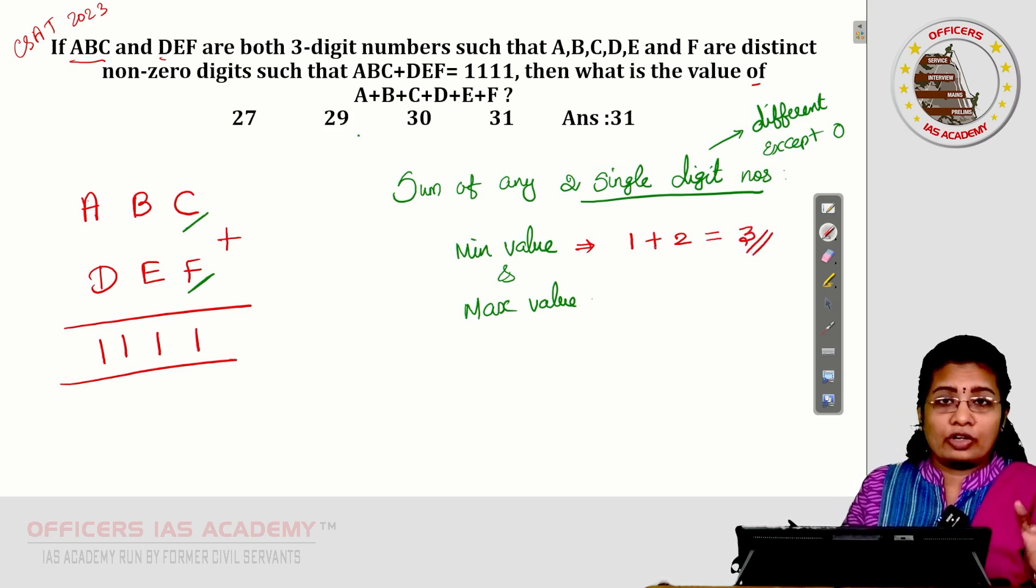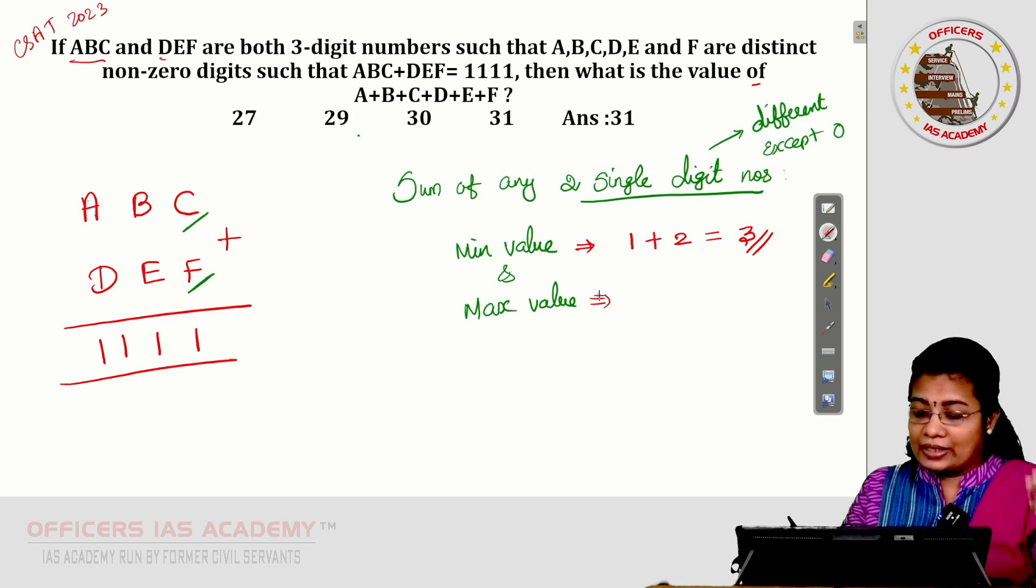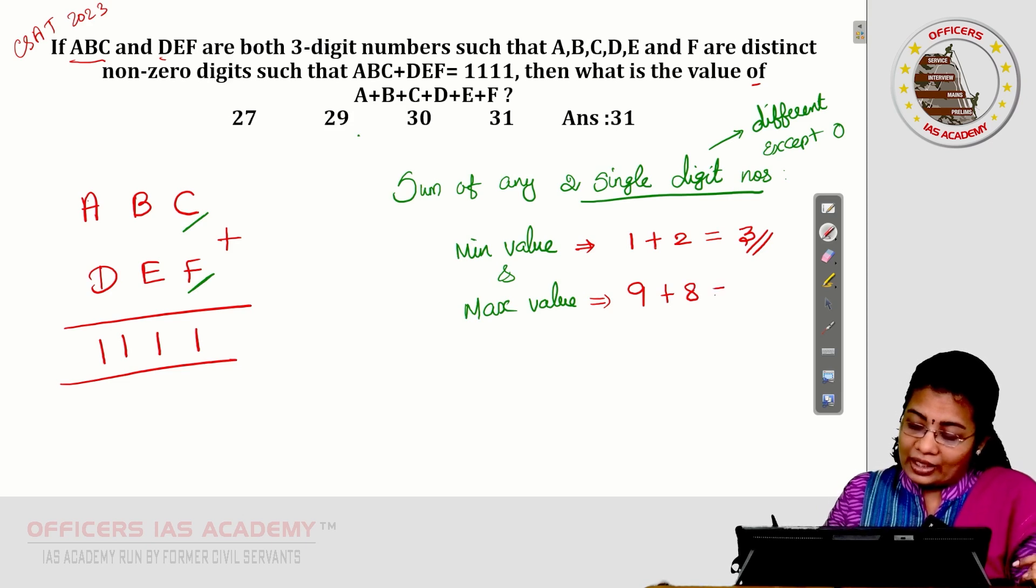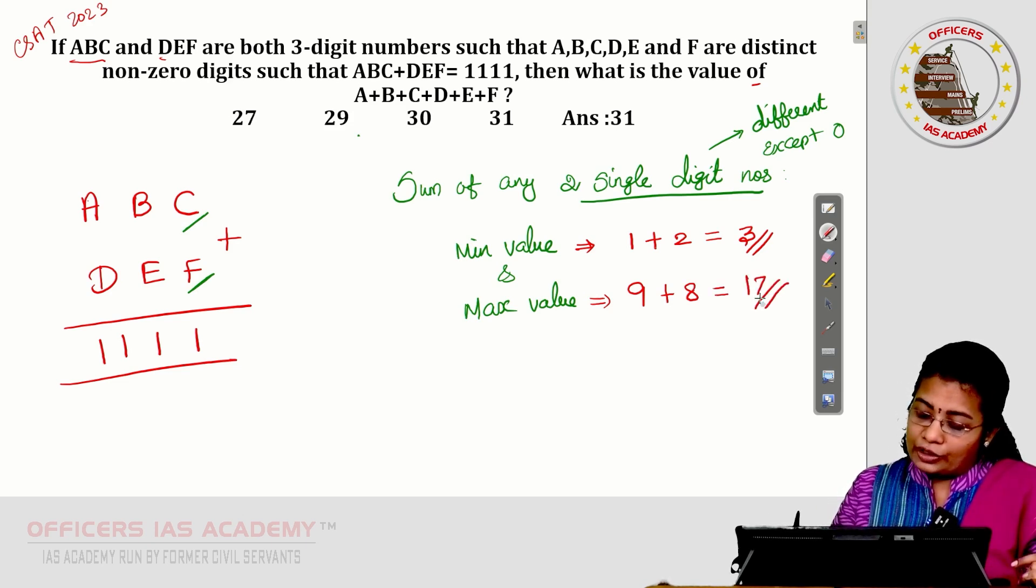And for maximum value, the maximum single-digit number you can consider 9. 9 plus the next maximum 8. If you add up 9 plus 8, you get 17. So, the minimum value is 3. The maximum value is 17.